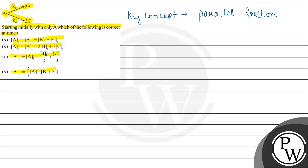We can write that in parallel reactions, one or more reactants—according to this question we have only one reactant—react simultaneously in two or more pathways.